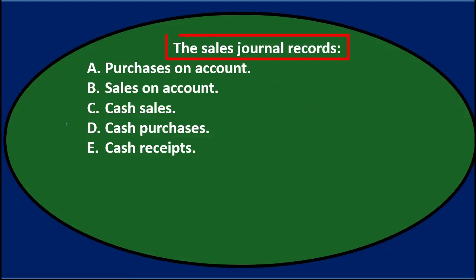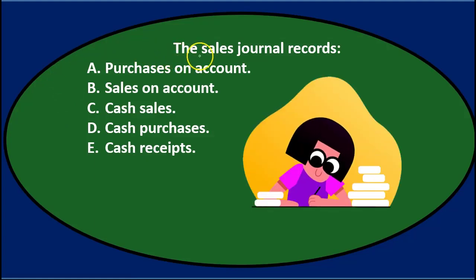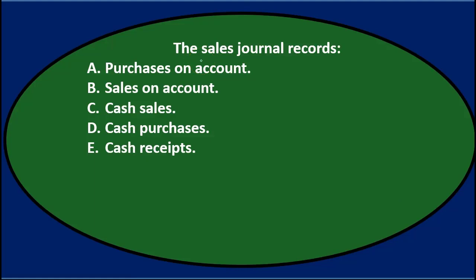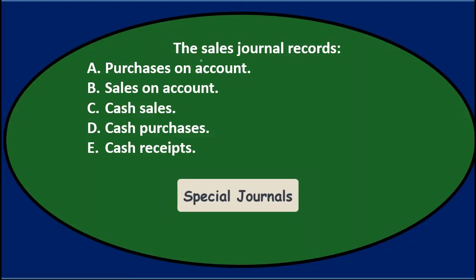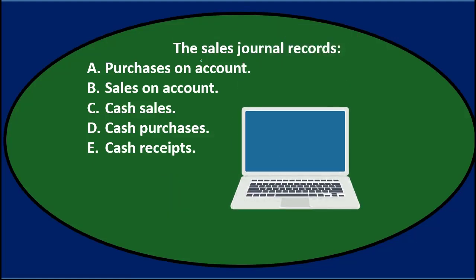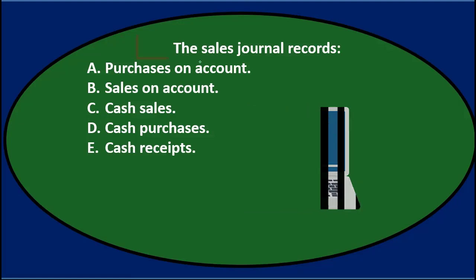So we have the sales journal records A. We might want to think about it first and try to answer from just the stem of the question. The sales journal — if we think about these special journals, these are journals we would use in a more manual system in order to save time, grouping transactions that are similar in nature. So the sales journal, just by the title, would have something to do with sales.